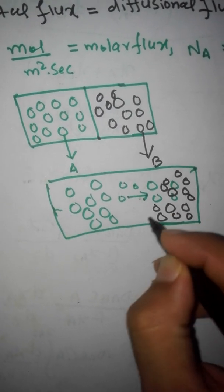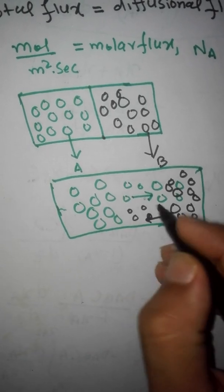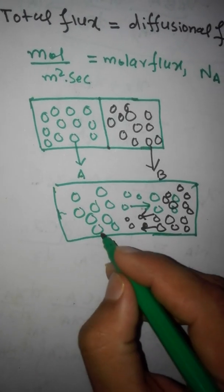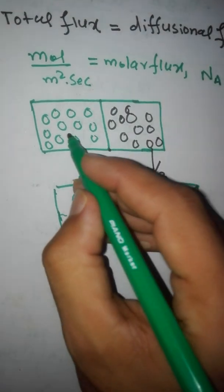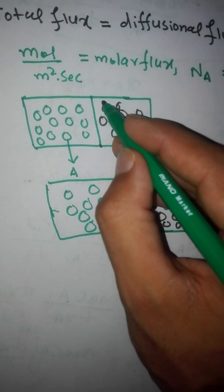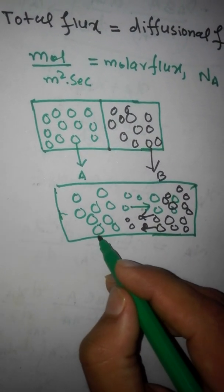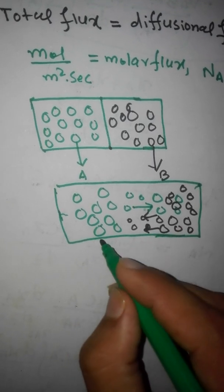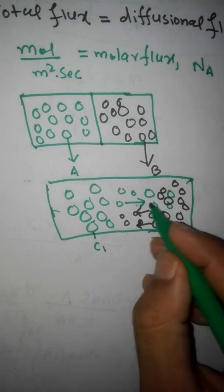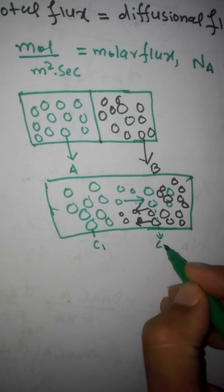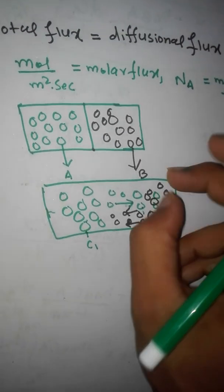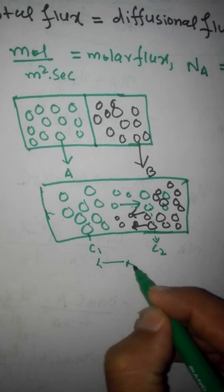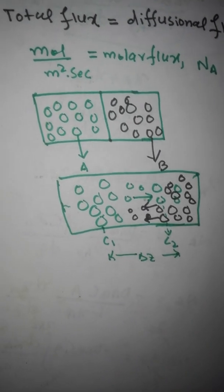Gas A will transfer from the left side to the right side, and gas B, which was high on the right side, will transfer from the right side to the left side. Initially, the concentration of A on the left was very high at C1, and on the right it was very low at C2. Gas A covers a distance delta Z.